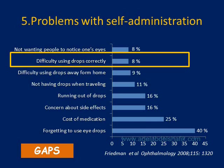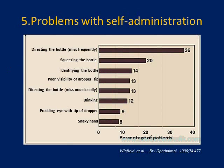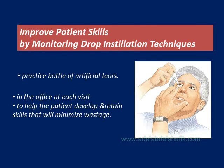Another factor contributing to difficulty using drops is often overlooked. It can be due to shaky hands, frequent blinking, inability to direct the bottle to the palpebral fissure, or poor visibility of the tip. Some patients have problems squeezing the dropper or cannot direct the bottle into the palpebral fissure. All these factors lower drug usage. We need to train the patient — use artificial tears at the clinic and have an assistant train the patient to apply the drops so they can do it at home.